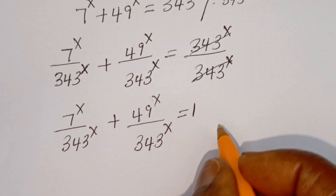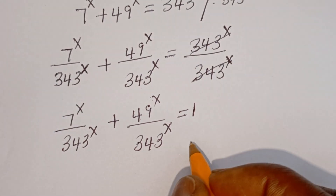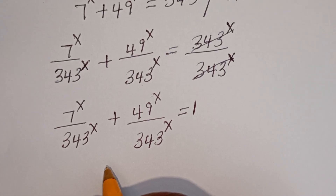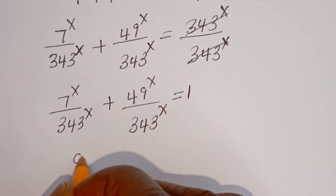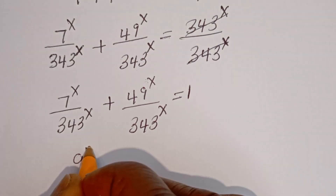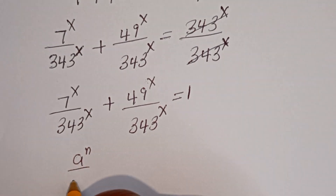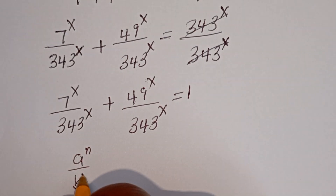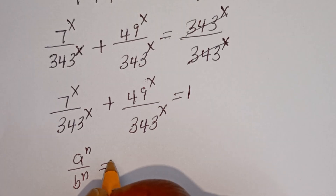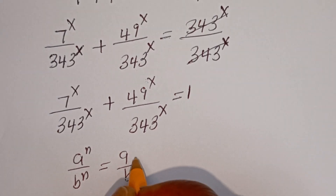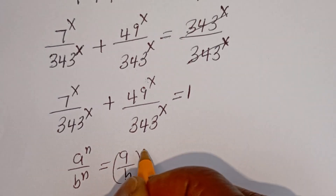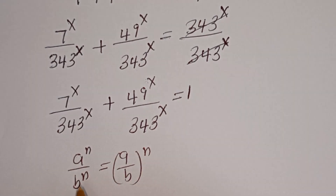Now take note of this: if you have A to the power of N over B to the power of N, this is equal to A over B to the power of N.